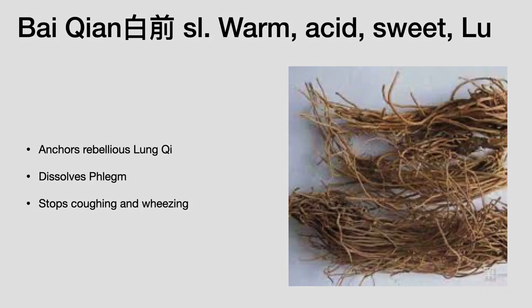One safe alternative to Ma Huang is Bai Qian. This is a warm, acrid, and sweet herb that enters the lung channel. It anchors rebellious lung qi, dissolves phlegm, stops cough and wheezing — a great and safe substitution for Ma Huang.